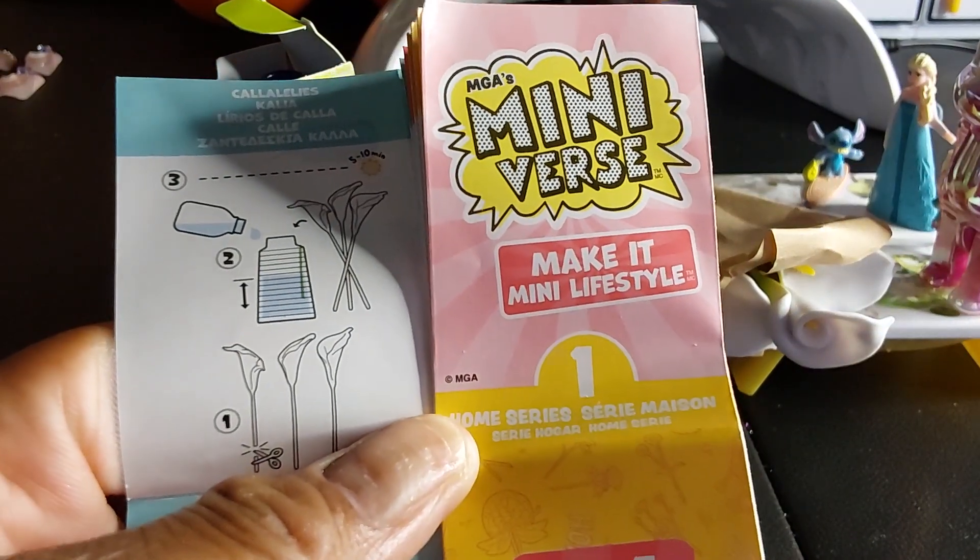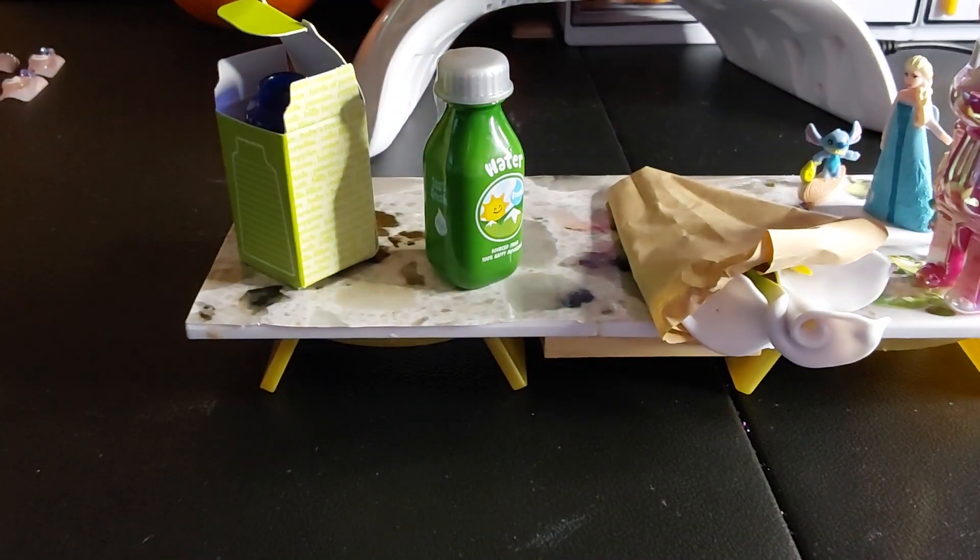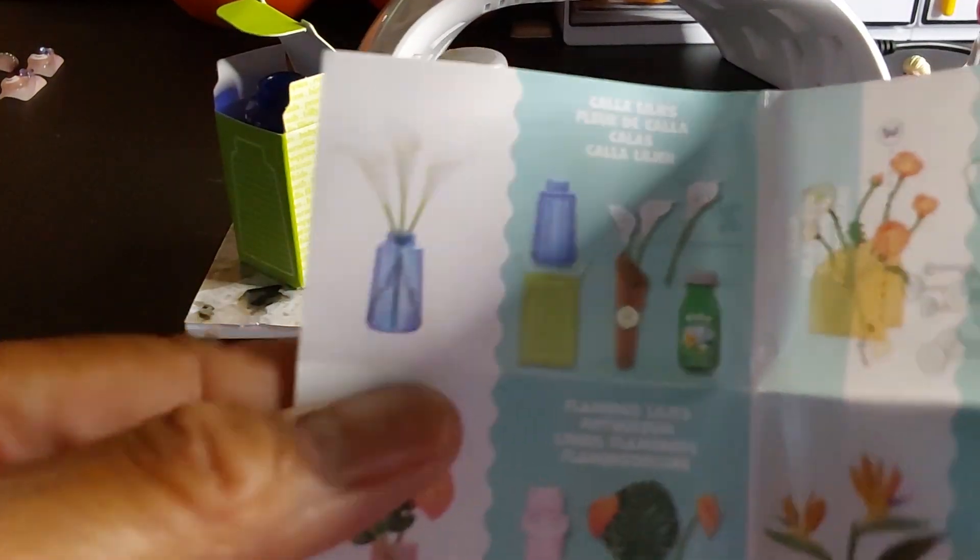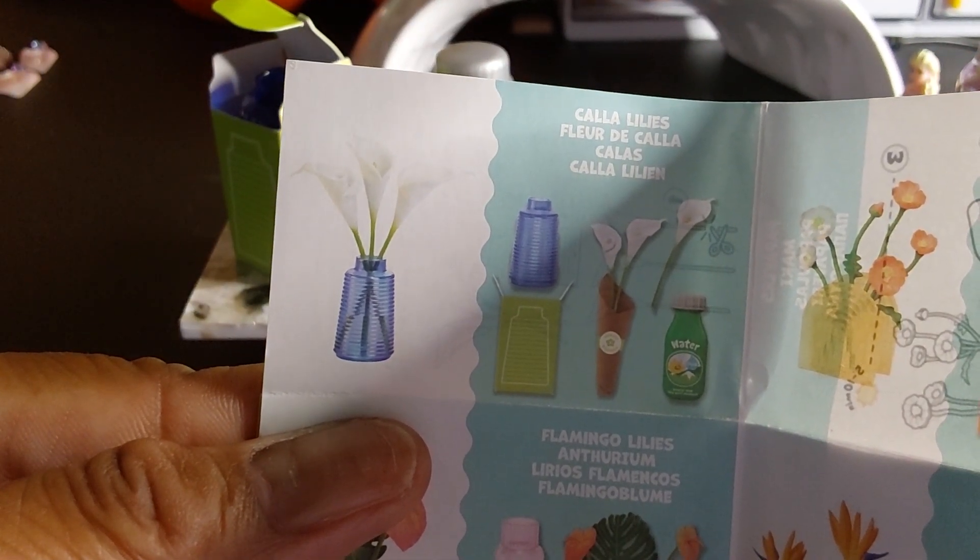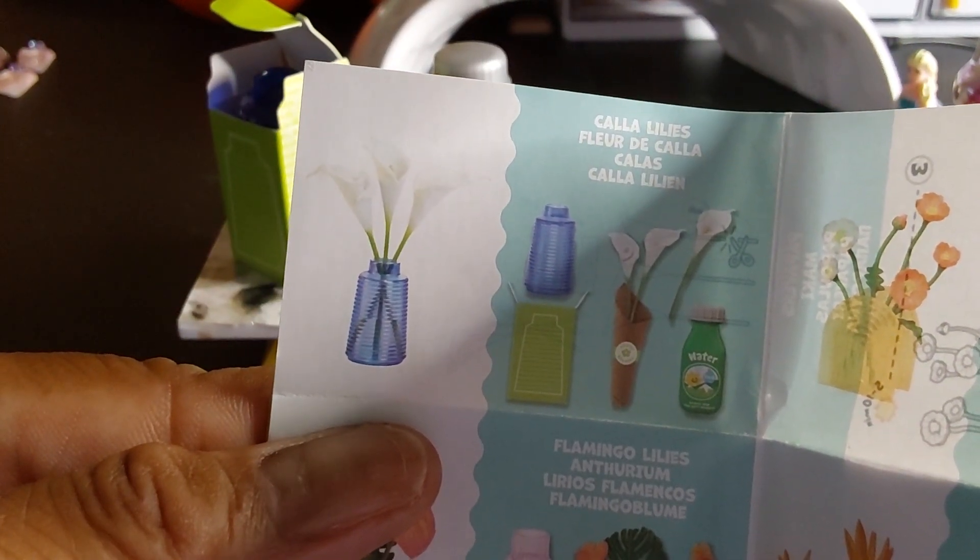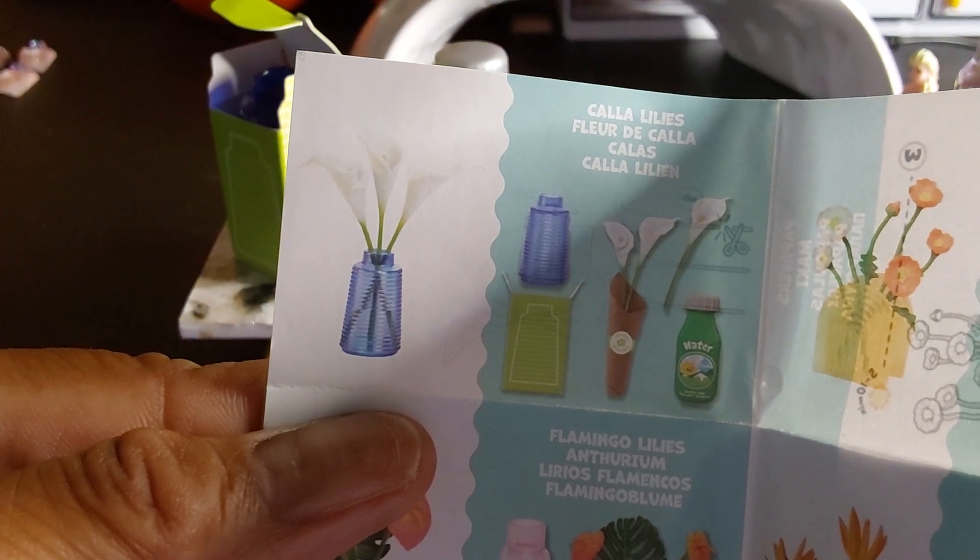We are going to be making the Miniverse Make It Mini Lifestyle Series 1. This is what we're making, the blue one at the top. I have no idea what the name is—I know what the flower is—but it's really cute. I really like the blue vase, so that's what we're going to be making.